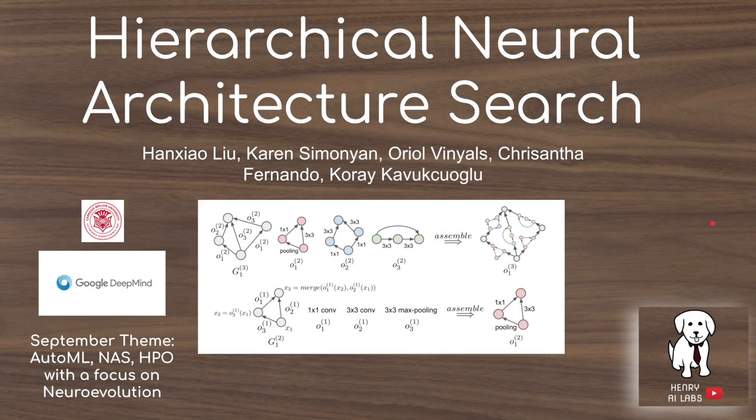Thanks for watching Henry AI Labs. This video will present hierarchical neural architecture search. In this paper, a novel way of encoding neural network architectures is presented that makes neural architecture search much more efficient and feasible using evolutionary search and random search algorithms. This paper is in line with the September theme on Henry AI Labs of AutoML, neural architecture search, and hyperparameter optimization with a focus on neural evolution.